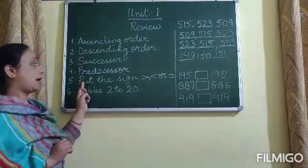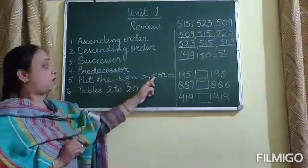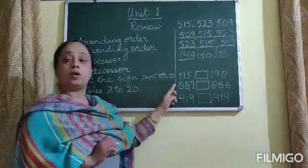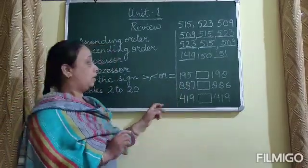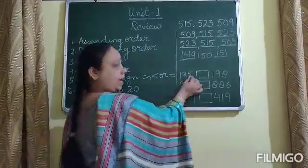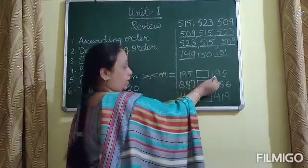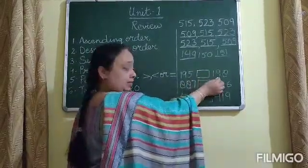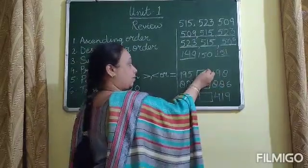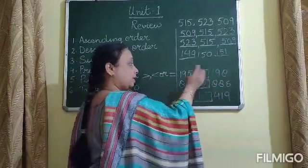Then we have to put the sign for the greater, smaller, or the equal numbers. 195 and 198. Which number is greater? 198 is greater. So, the sign we will put here will be this.